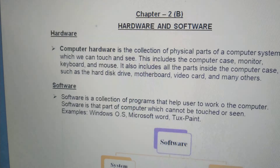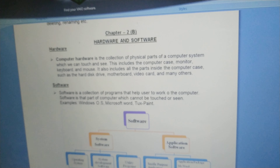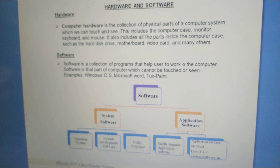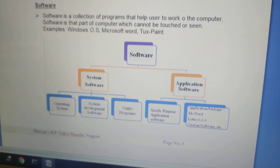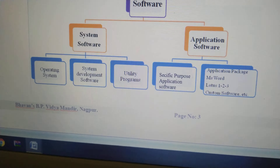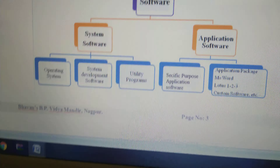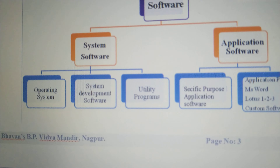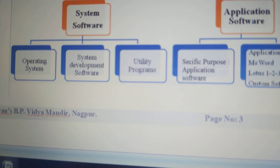What happens in system software? System software is the software which helps us to manage the system resources. System means computer system. What resources are there — like hard disk, motherboard — it manages everything.